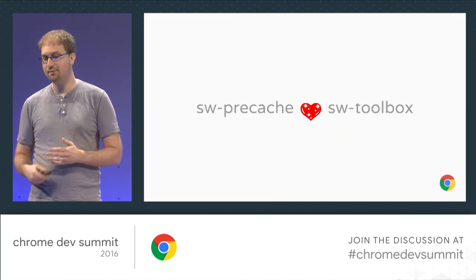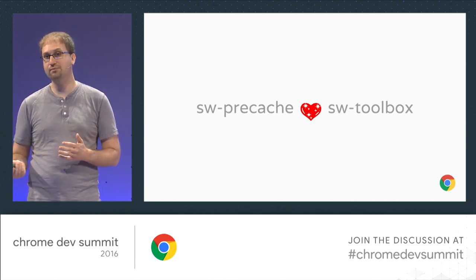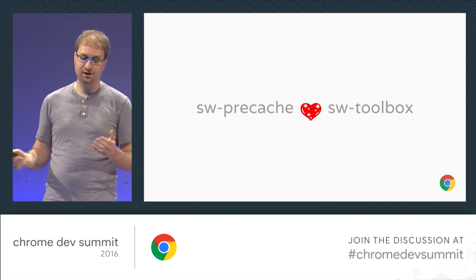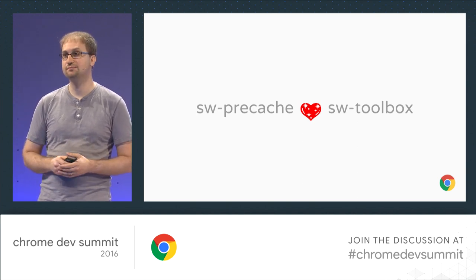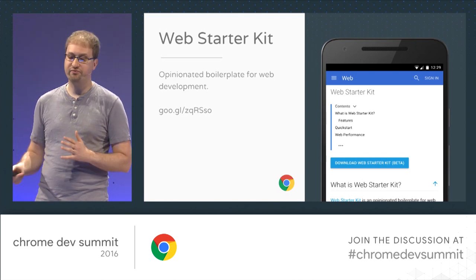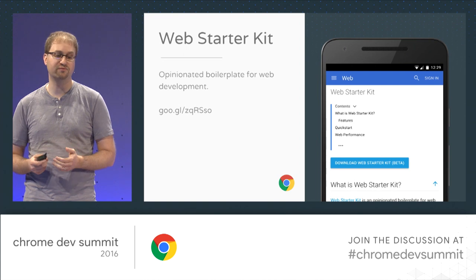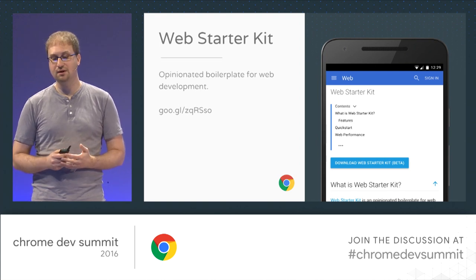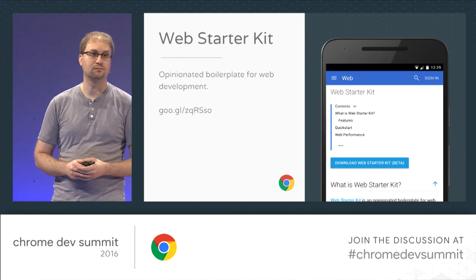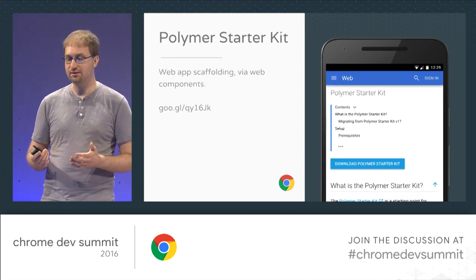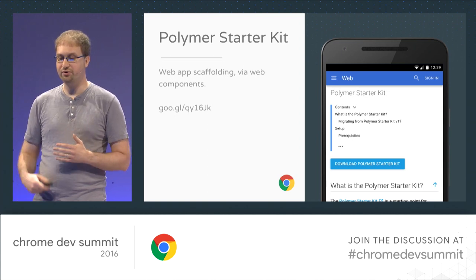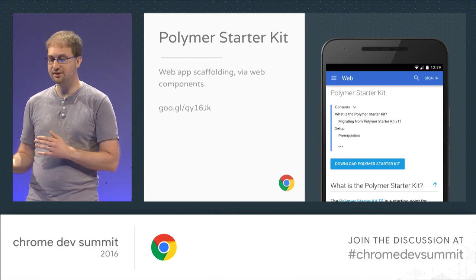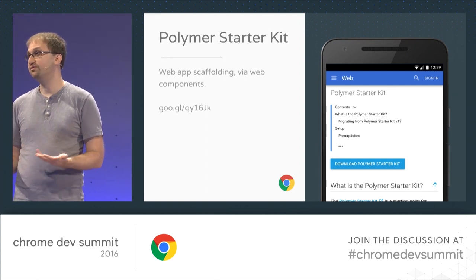swprecache and swtoolbox complement each other and can be used together to handle both pre-caching and runtime caching for your progressive web app. We have a few projects pre-configured to use both libraries out of the box. First is Web Starter Kit, which provides boilerplate for common web development scenarios — swprecache and swtoolbox are baked right into its build process, making your new web app offline-first by default. We also have Polymer Starter Kit, a great jumping-off point for developers building progressive web apps with web components, and the service worker libraries are included there as well, ensuring assets needed to render routes load quickly and everything works offline.